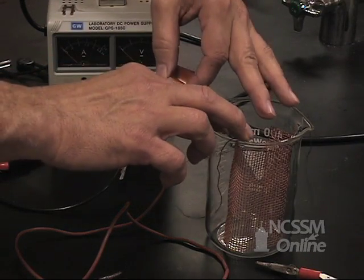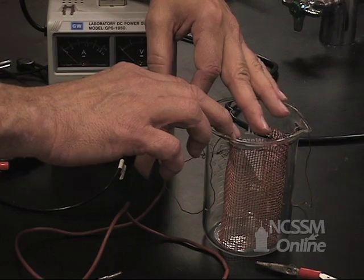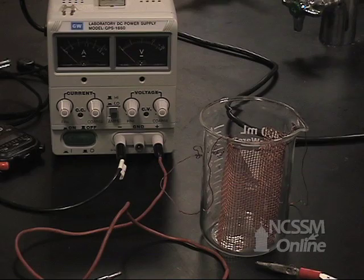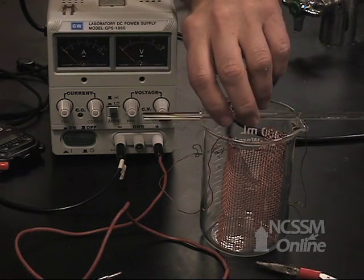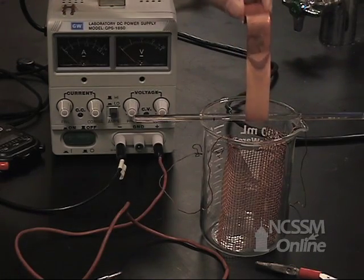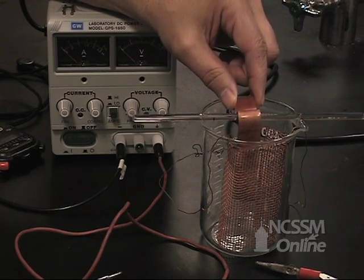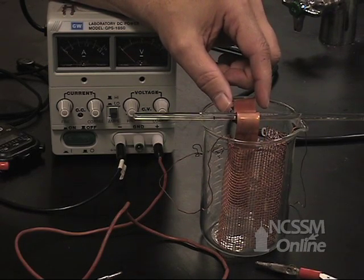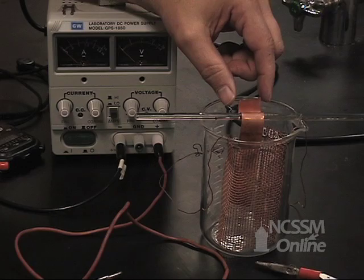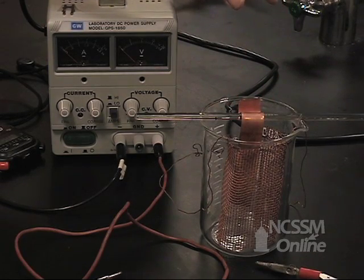We're going to place our copper mesh into a 400 milliliter beaker. Across that we're going to put a stirring rod, and we're going to support the anode from that glass stirring rod. That copper anode is going to sit in the middle of our copper mesh.